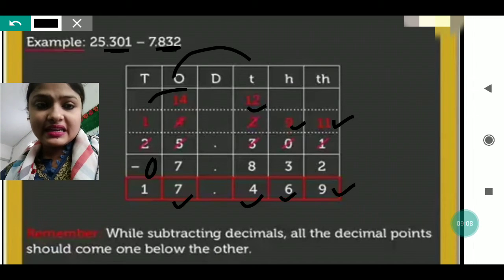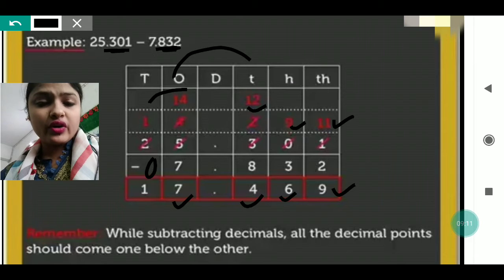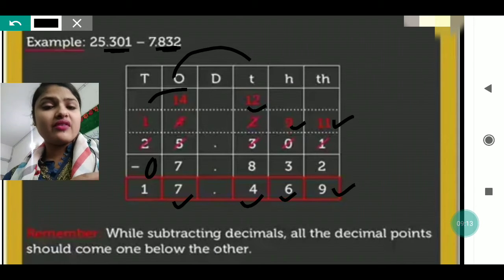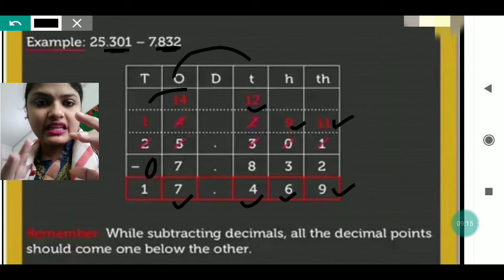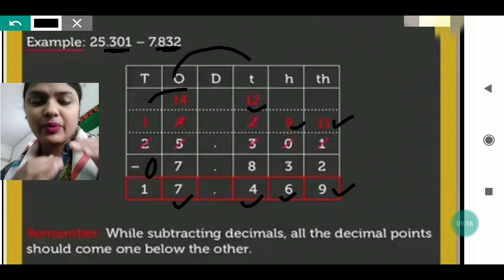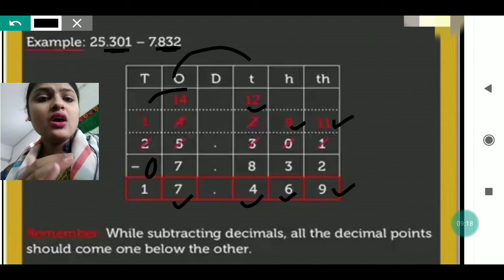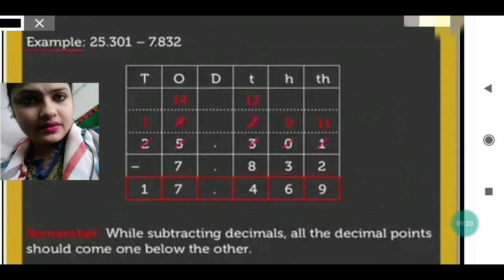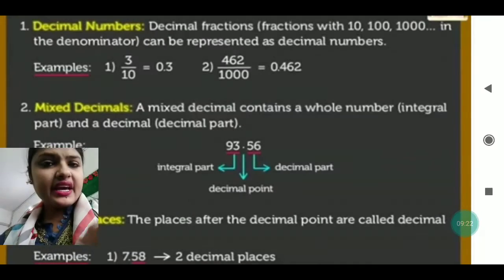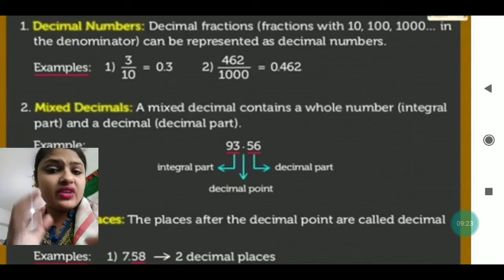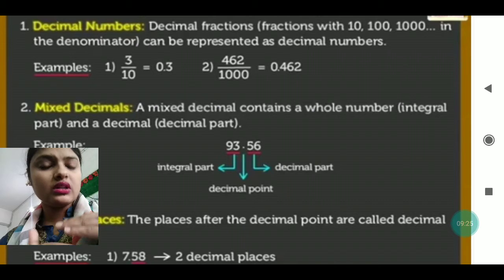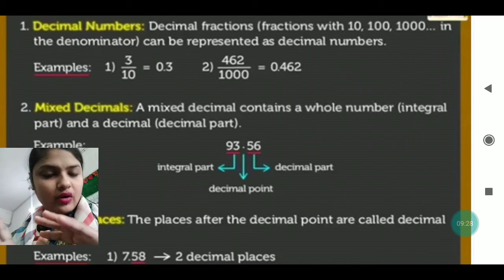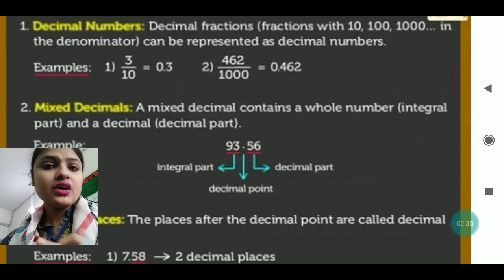While subtracting decimals, all the decimal points should be placed one below the other. Whenever you are writing numbers for subtraction in decimal, the numbers should be written one below another with decimal points aligned.